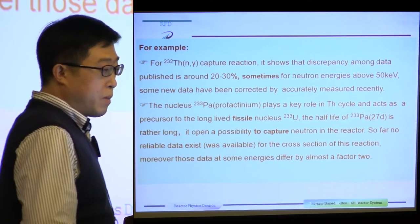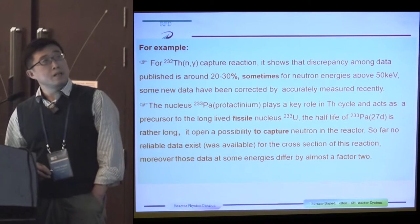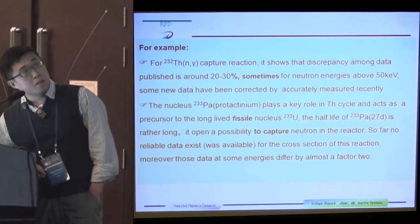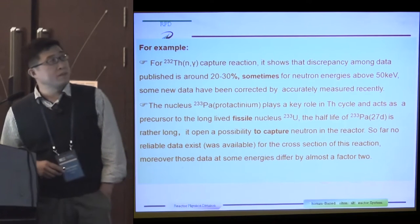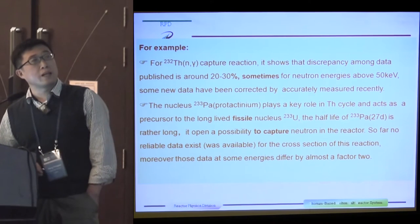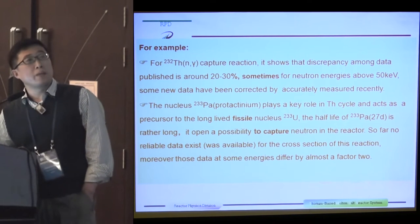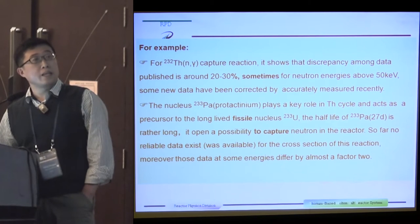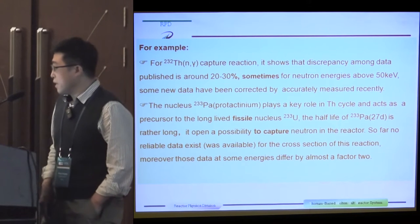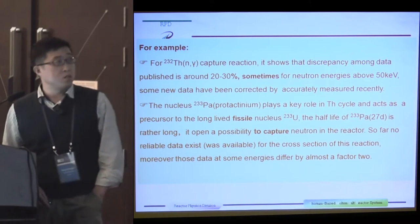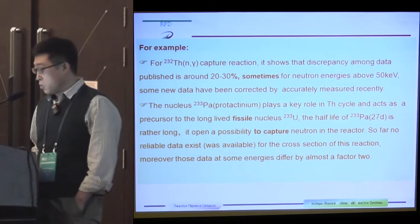Some new data have been corrected by accurate measurements recently. The nucleus protactinium plays a key role in the thorium cycle, and as a precursor to the long-lived fissile nucleus uranium-233. The half-life of the Pa nucleus is 27 days, which is rather long. It opens a possibility to capture neutrons in the reactor. So far, no reliable data was available for the cross-section of this reaction.